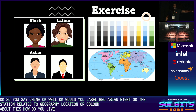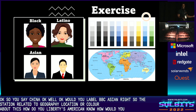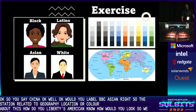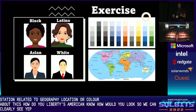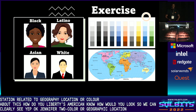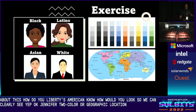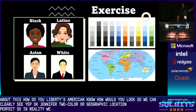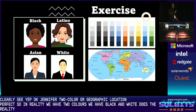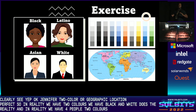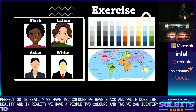How would you label this picture? American? No — how would you label it? Does it refer to color or geographic location? In reality, we have two colors: black and white. And in reality, we have four people — two colors, and two we can identify by their geographic location.